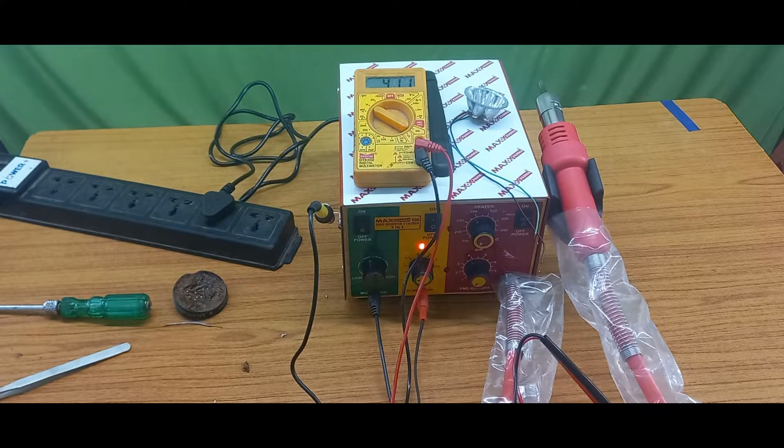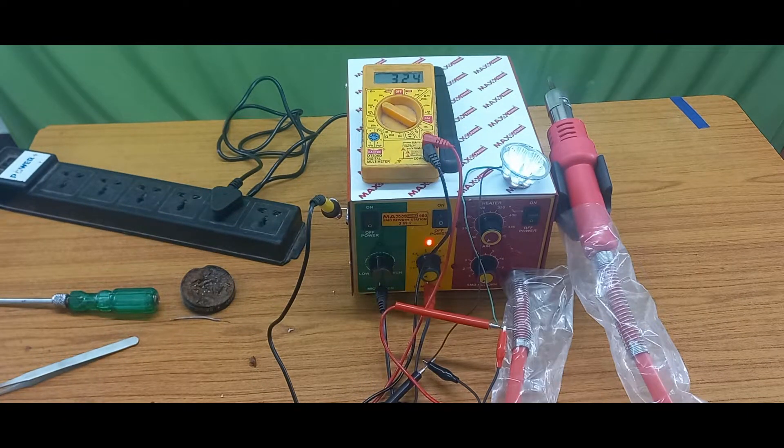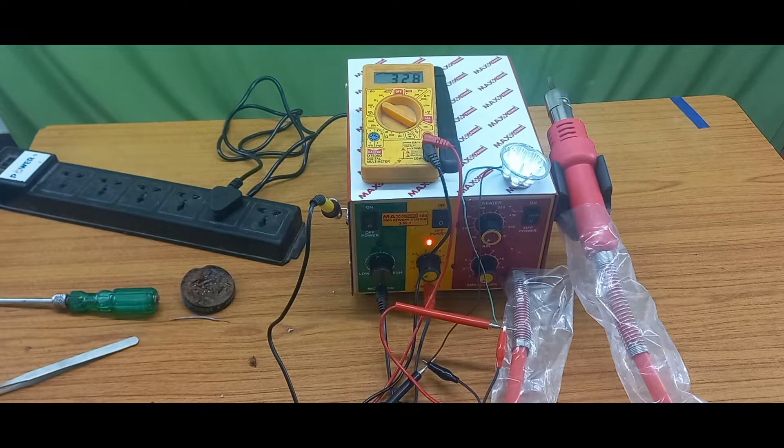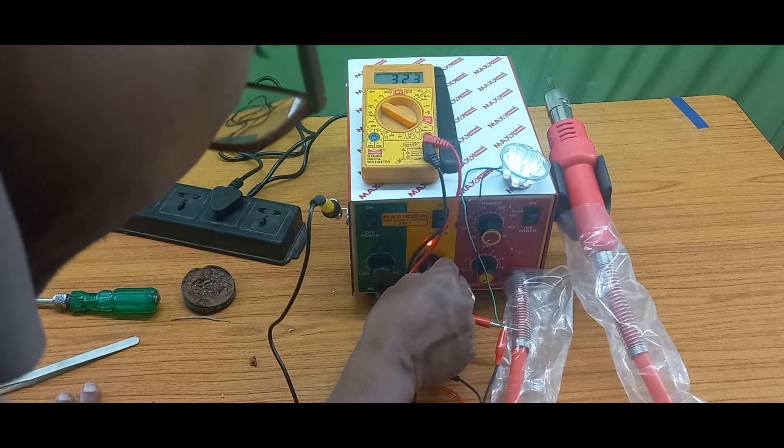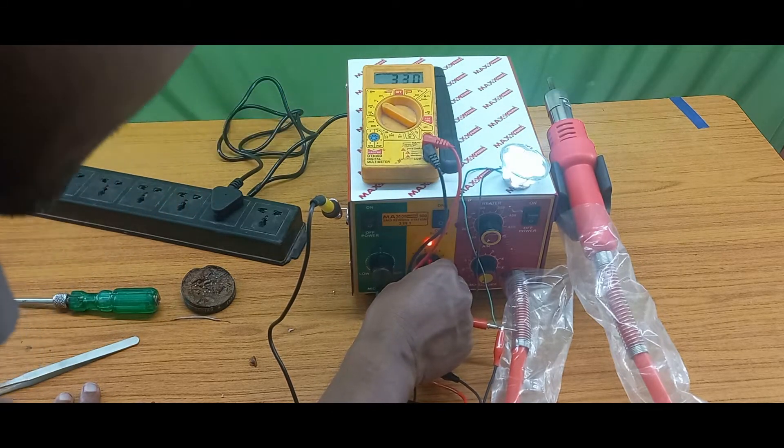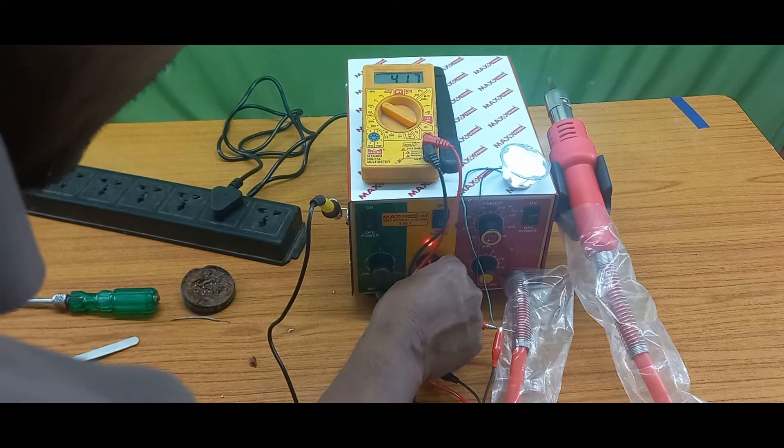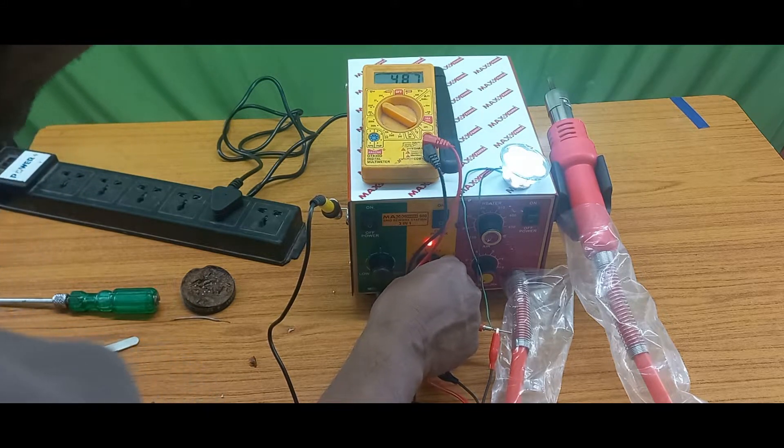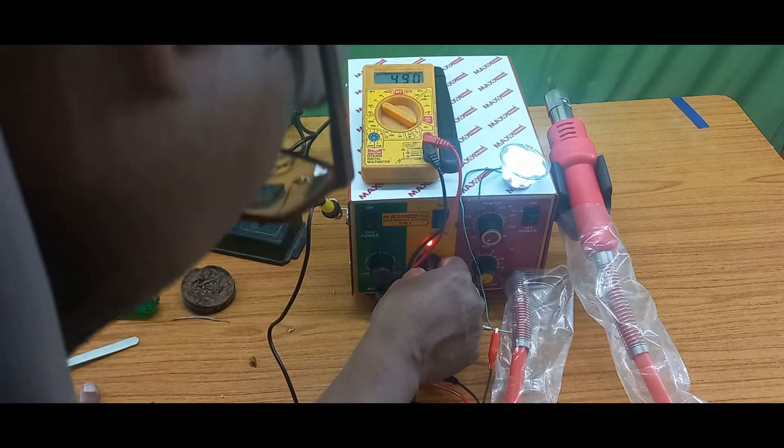Now I will show you increasing the voltage step by step. I will connect with series one load. Now I will increase. This voltage is showing already 3 volts. I will increase step by step. It is 4.5 volts accuracy with load. This is 5 volts, nearly accuracy is 90 percent accuracy. After that I'm increasing this voltage step by step.